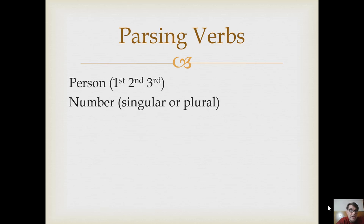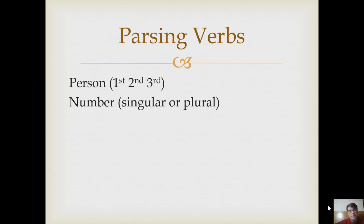Then of course there's number. Verbs have number — singular if there's one, plural if there's more than one. 'I' is singular, 'we' is plural, 'she' is singular, 'they' are plural. So verbs have person and number.